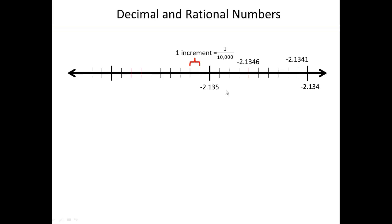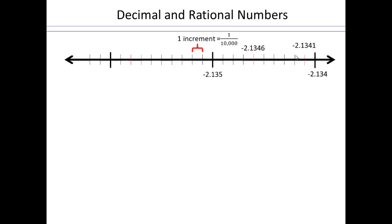Why is that? Because this is 10th, hundredths, thousandths. So if this is thousandths, then the next little tick mark is going to be 10,000. And so if you have tick marks and you're plotting negative numbers, look what happens. This is negative 2.134. This will be negative 2.1343, 2.1344, 2.1345, 2.1346.